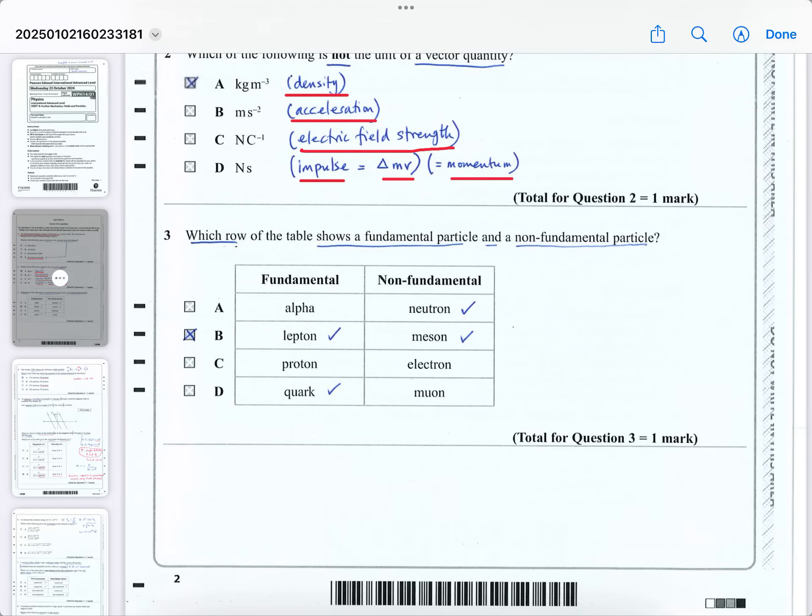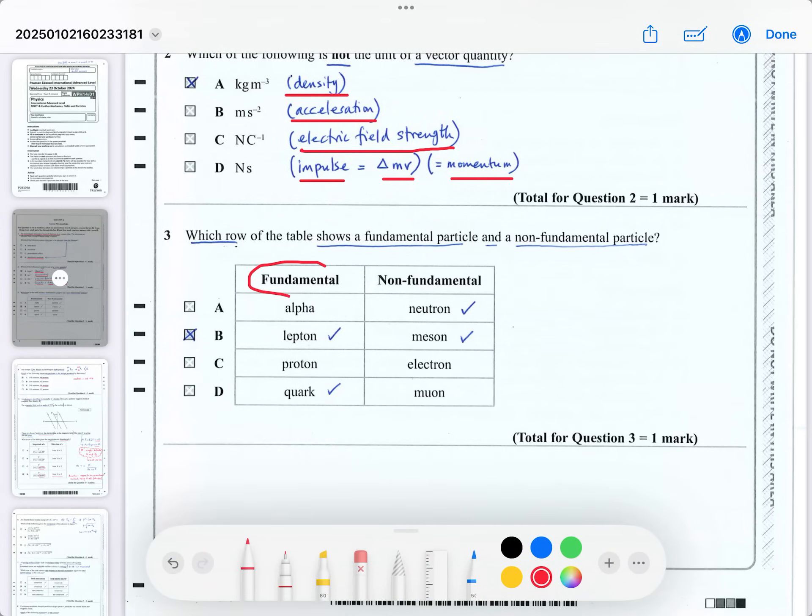Question three, which row shows a fundamental particle in the first column and a non-fundamental particle in the second column? Non-fundamental means that you can't split them into something smaller. So one of the fundamental particles is a lepton. You can't split them into something smaller. The most common example is the electron, and quarks are fundamental particles which make up heavier particles. So alpha is two protons, two neutrons, so that's not fundamental, and a proton is made of quarks. So a proton is made of quarks, so it can't be a fundamental particle. And then non-fundamental, the electron is fundamental, and the muon is like a heavier version of an electron, so you can't split them into something smaller. So these are fundamental, whereas non-fundamental, like a neutron made of three quarks and a meson made of quark and an anti-quark. So the answer is B. It has both columns correct.